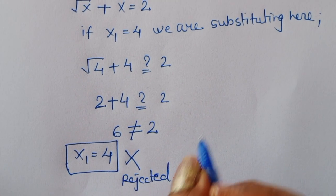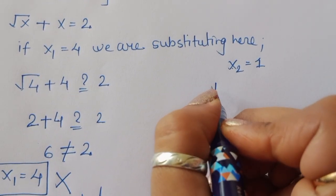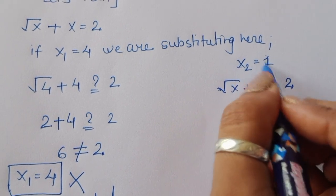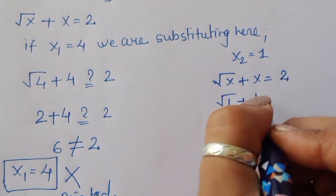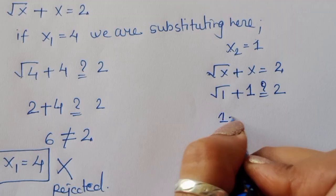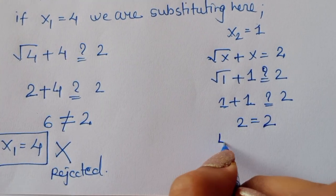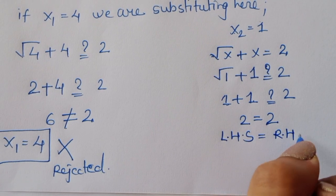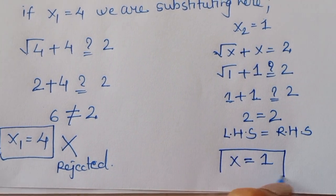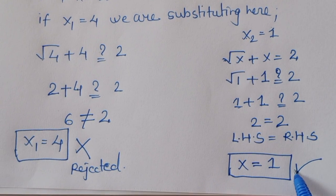Now substituting x₂ = 1 into √x + x = 2: √1 + 1 = 1 + 1 = 2, which equals 2. So LHS = RHS, meaning x = 1 is the correct solution. x₁ = 4 is rejected and x₂ = 1 is the correct answer.